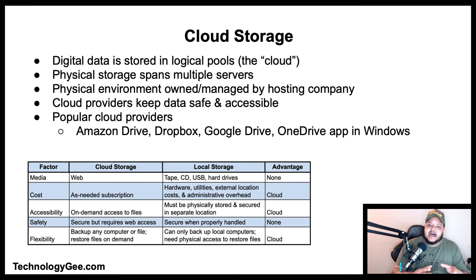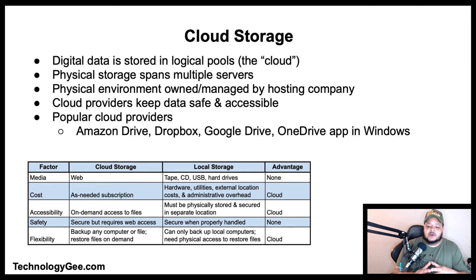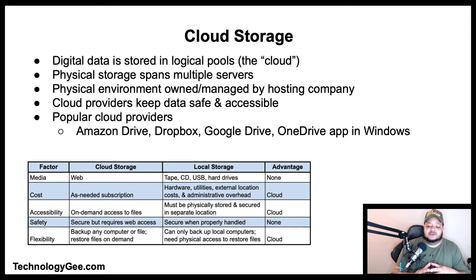Then we have cloud storage. Cloud storage is a model of computer data storage in which digital data is stored in logical pools, said to be the cloud. The physical storage spans multiple servers, sometimes in multiple locations, owned and managed by a hosting company. Popular cloud storage providers offering varying levels of storage space, encryption services, and price points include Amazon Drive, Dropbox, Google Drive, and OneDrive for Windows. Below is a chart showing some of the differences between cloud and local storage.